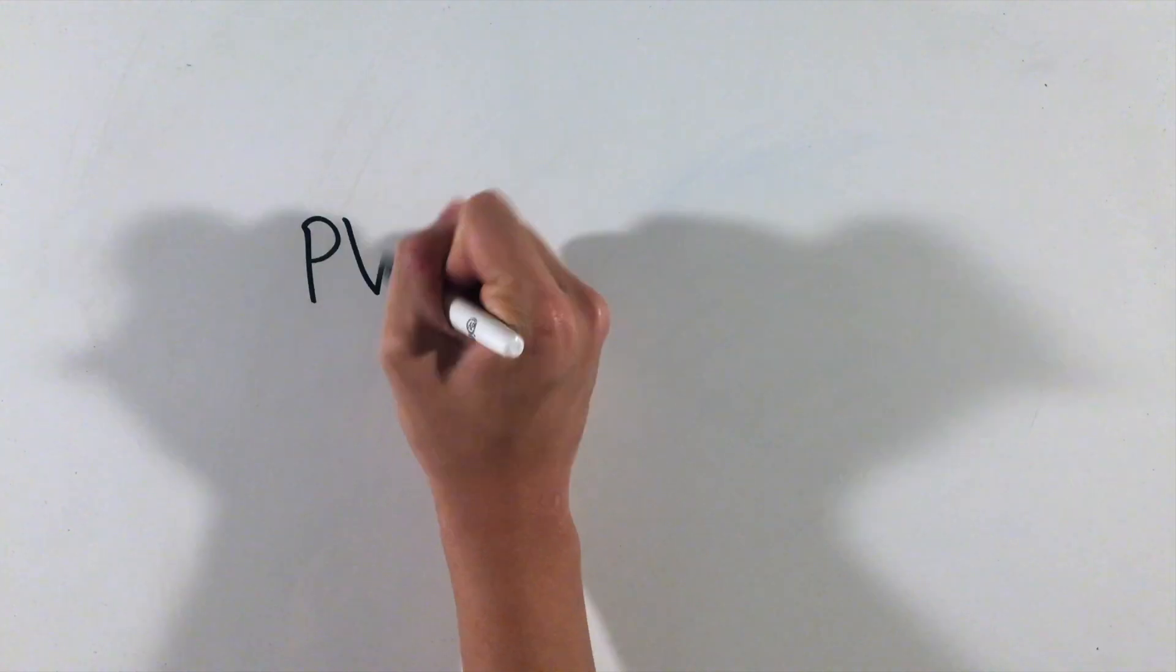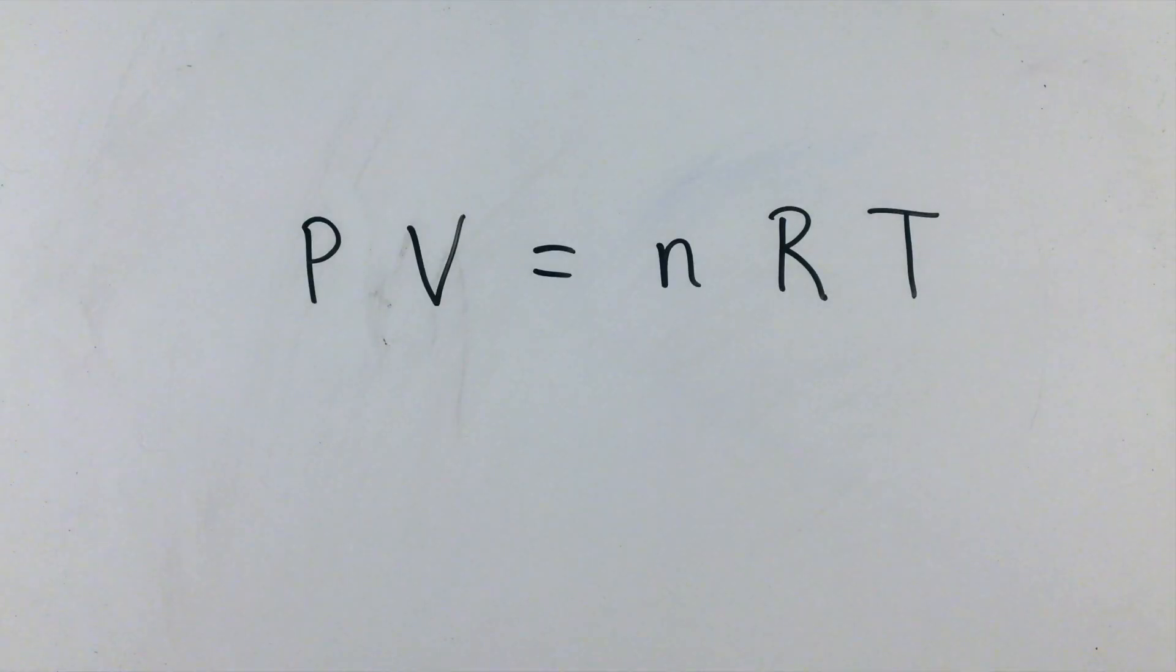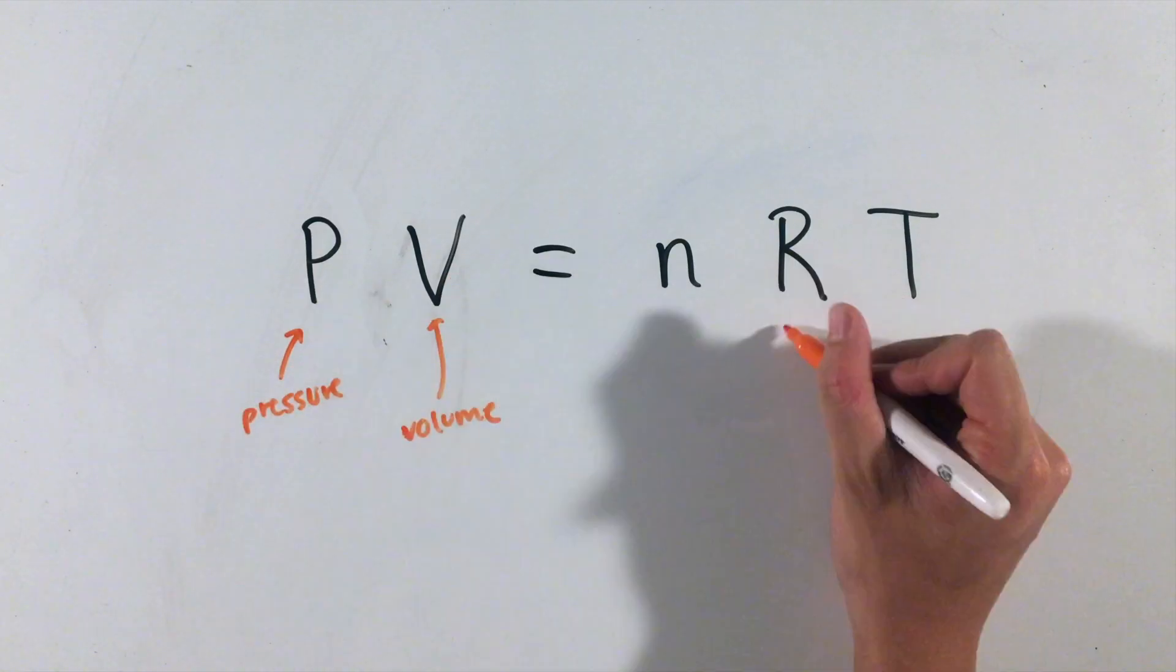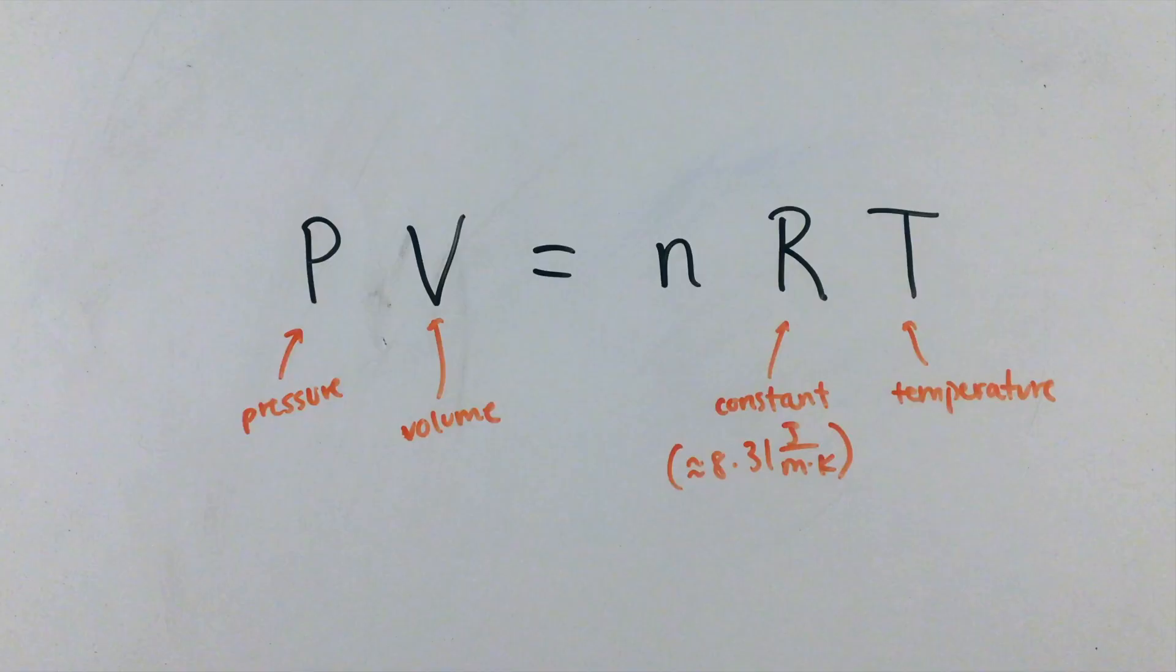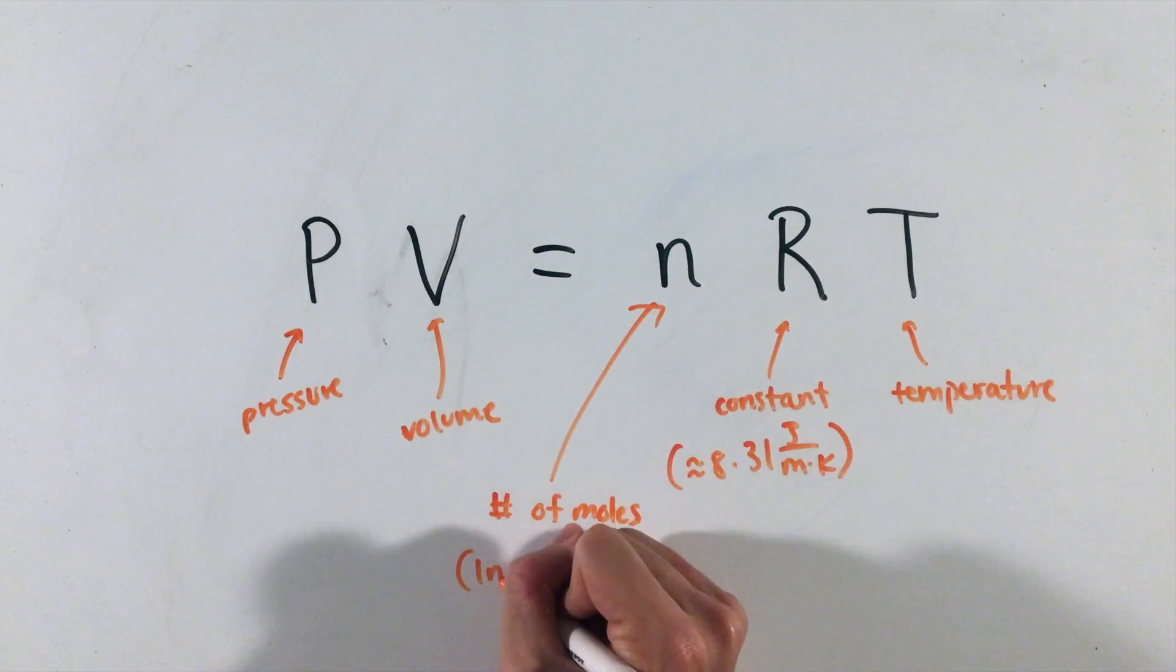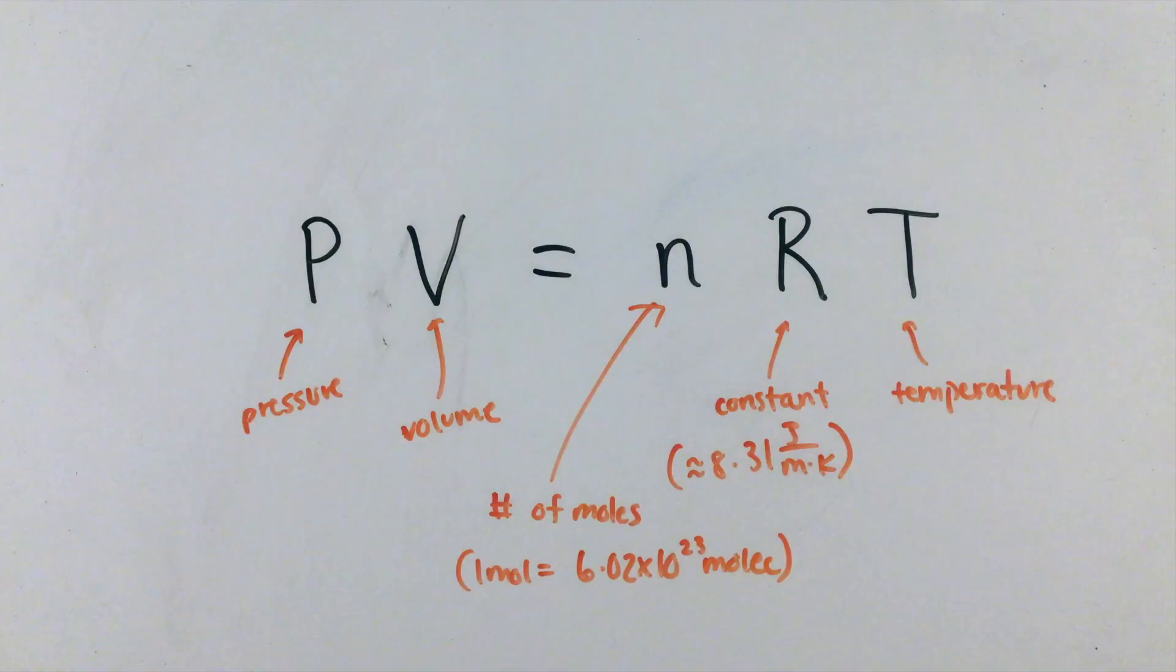These quantities, along with others, are related in arguably the most famous and important gas equation, the ideal gas law. This equation provides a relationship between pressure, volume, a universal gas constant, temperature, and the number of moles of gas, where one mole contains Avogadro's number, or this many, molecules of gas.